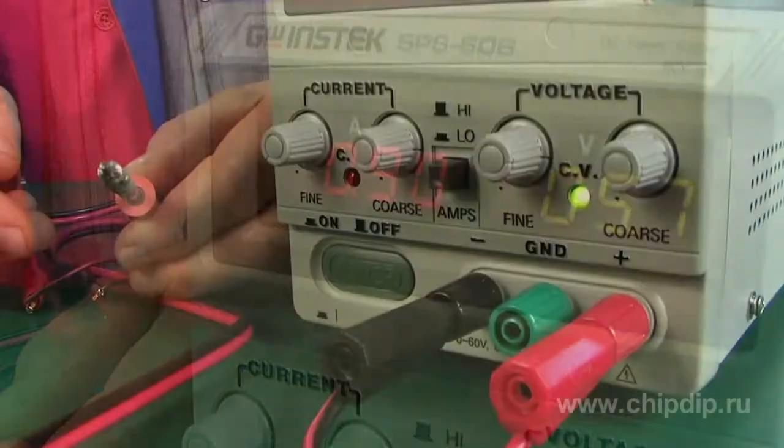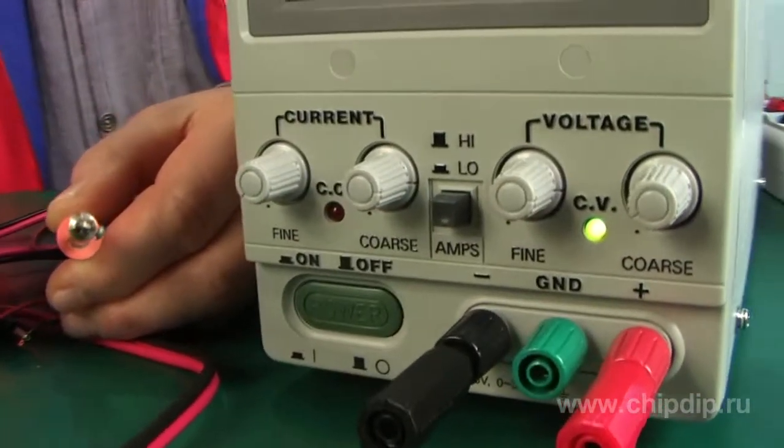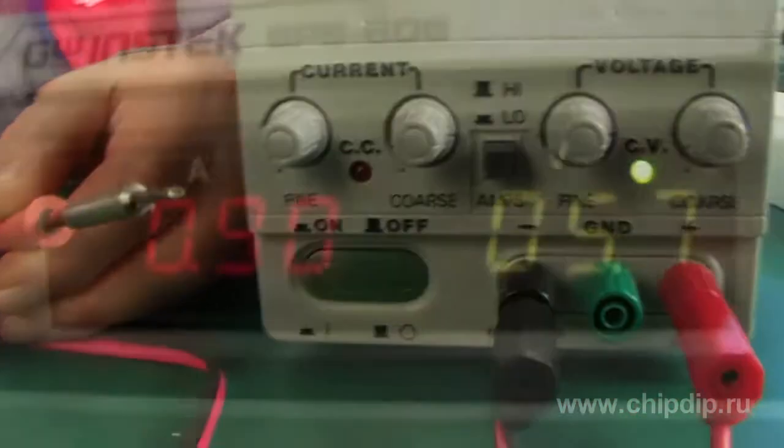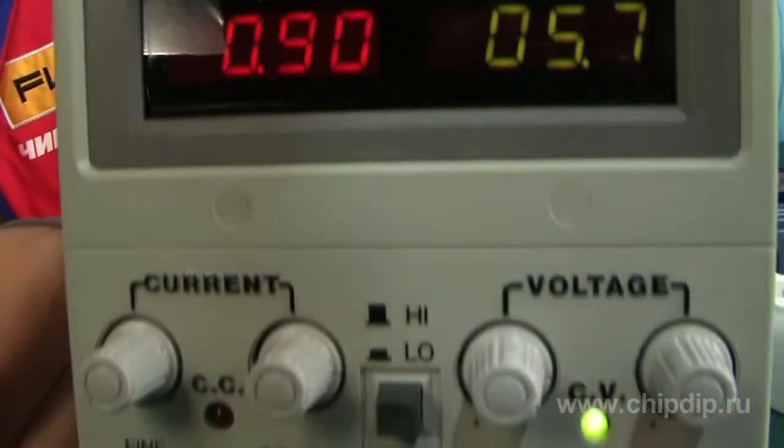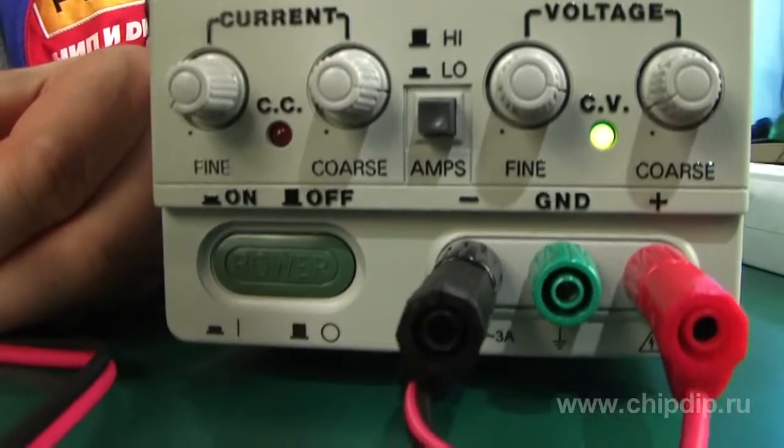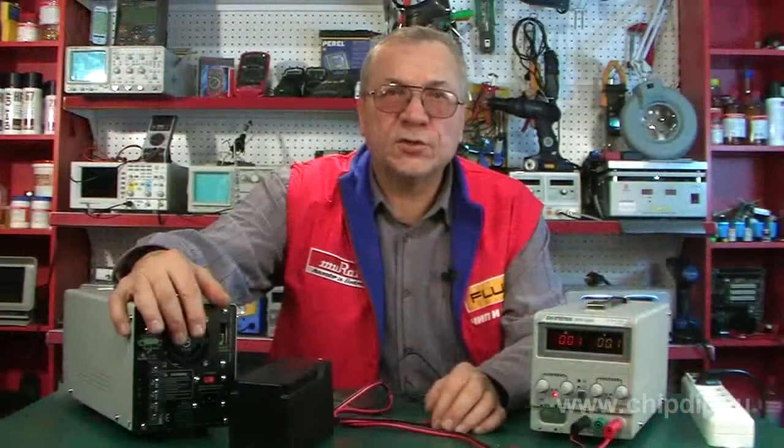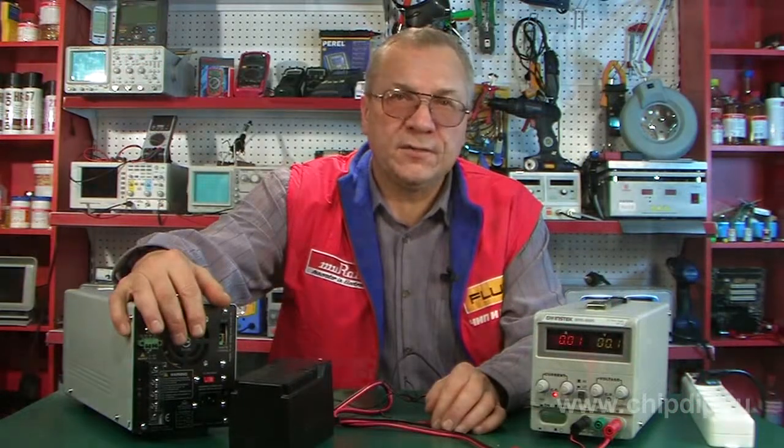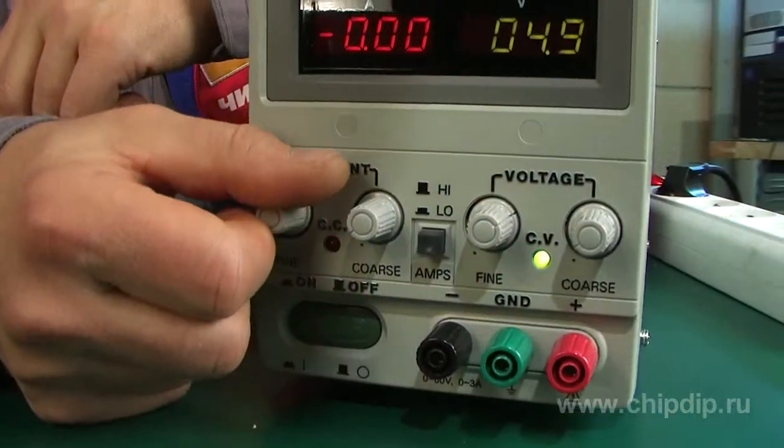The adjustable pulse power source SPS606 is used for powering radio technical devices with stabilized DC voltage and current, and can be used both in laboratories and industry. The power source SPS606 has a pulse stabilizer.